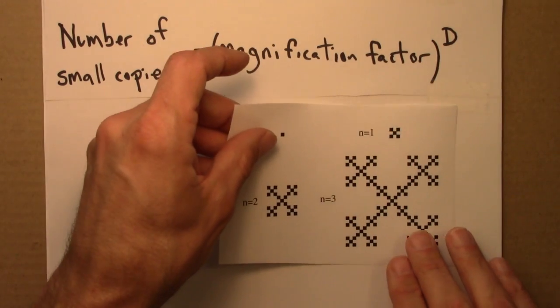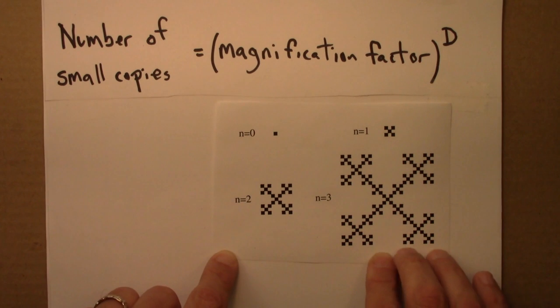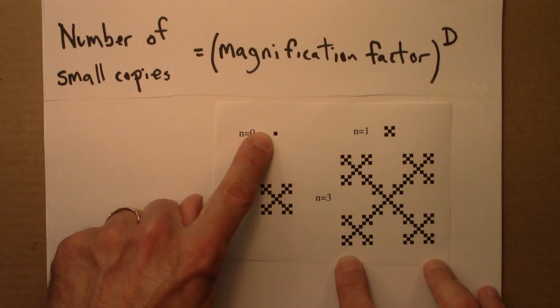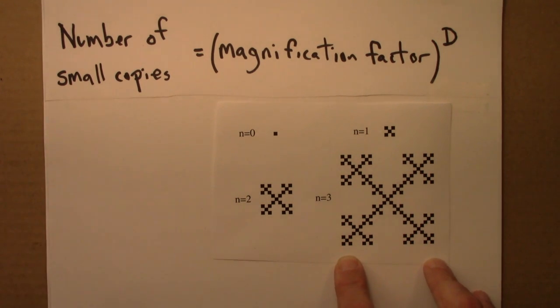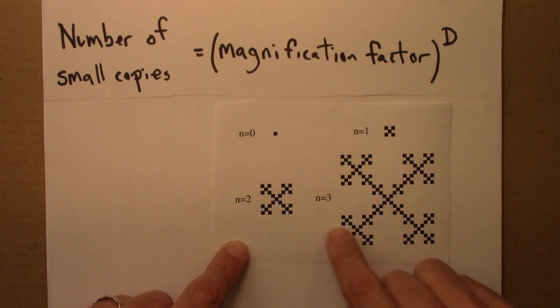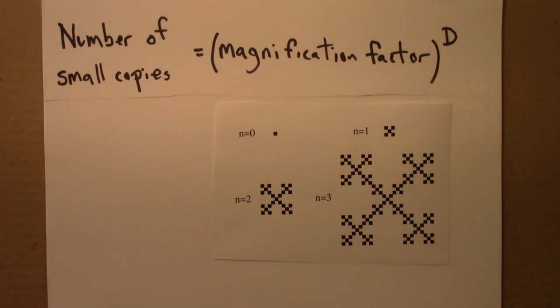Here is another view of the process of creating this fractal. We started at the zeroth step with a single square - I drew it as a dot originally. Then we go here, this is step two, and this is step three.